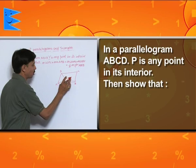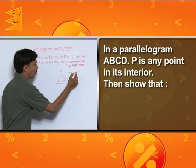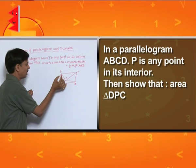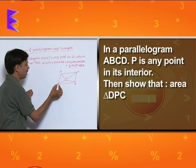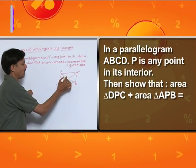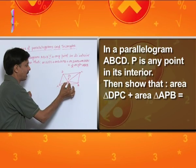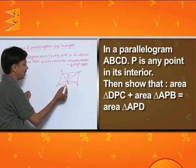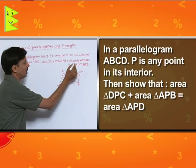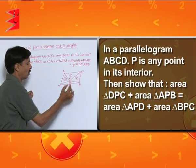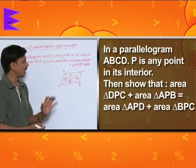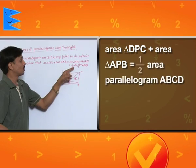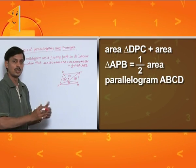We need to show: area of triangle DPC (triangle 1) plus area of triangle APB (triangle 2) equals area of triangle APD (triangle 3) plus area of triangle BPC (triangle 4), and this sum equals half of the area of parallelogram ABCD.